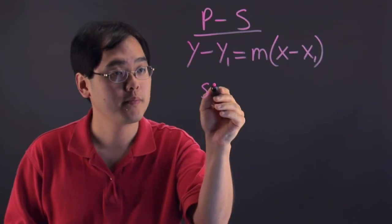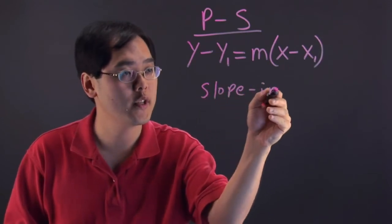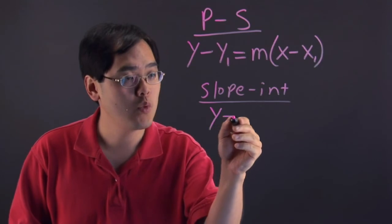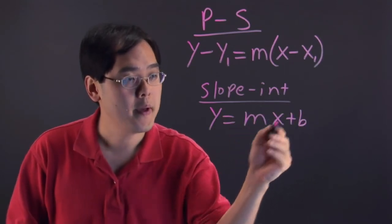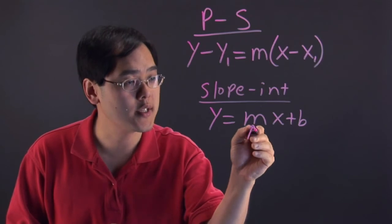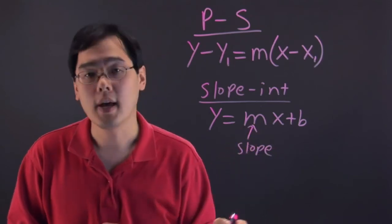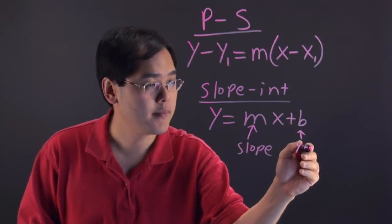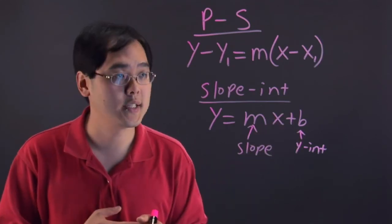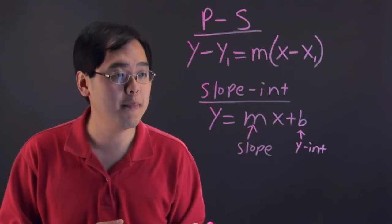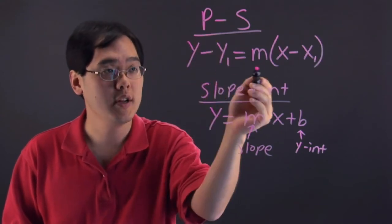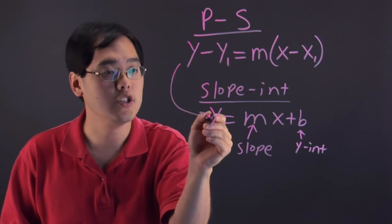The slope-intercept form, which I'll denote as slope-int for short, is often the more popular of the two forms. It's written as y equals mx plus b. M is the slope of the equation, and b is the y-intercept of the line — in other words, the point at which the line touches the y-axis. Because slope-intercept is the more popular form, since you can graph a line using the y-intercept and the slope, you often use the point-slope equation and rewrite it to transition into slope-intercept form.